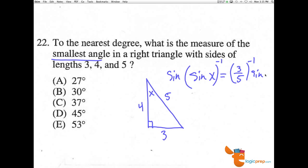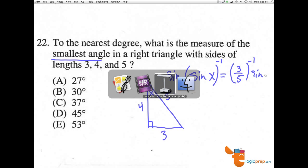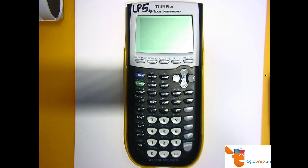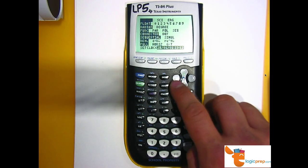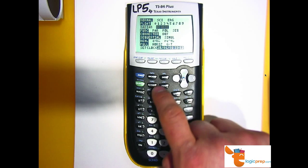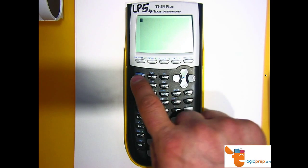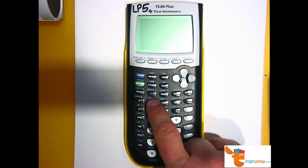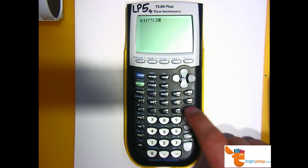And so I'll go to my calculator here, and I'm going to check my mode. I'm actually in radian, so I'm going to switch to degrees. Now, I'm going to hit the second inverse sine of 3 divided by 5.